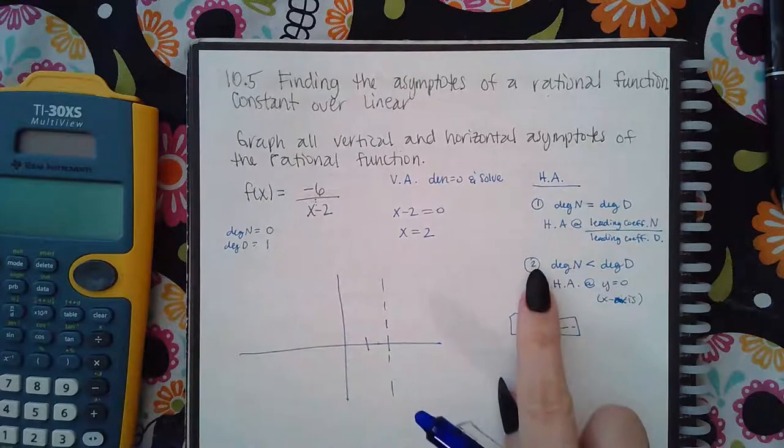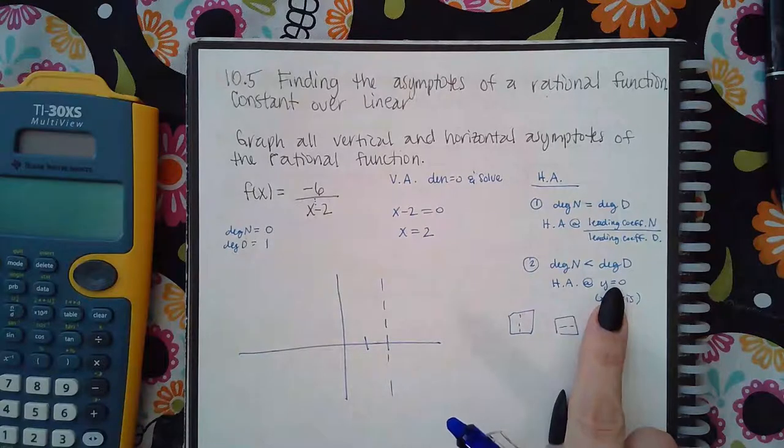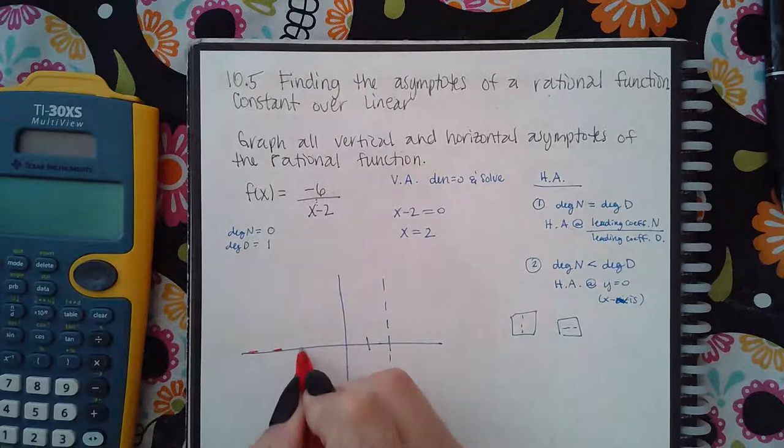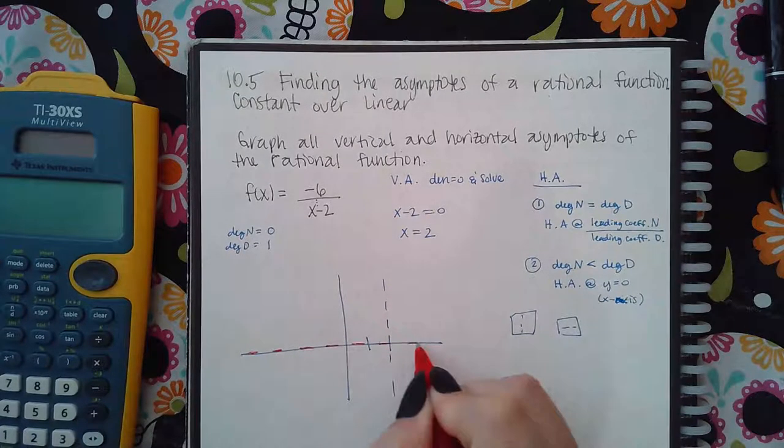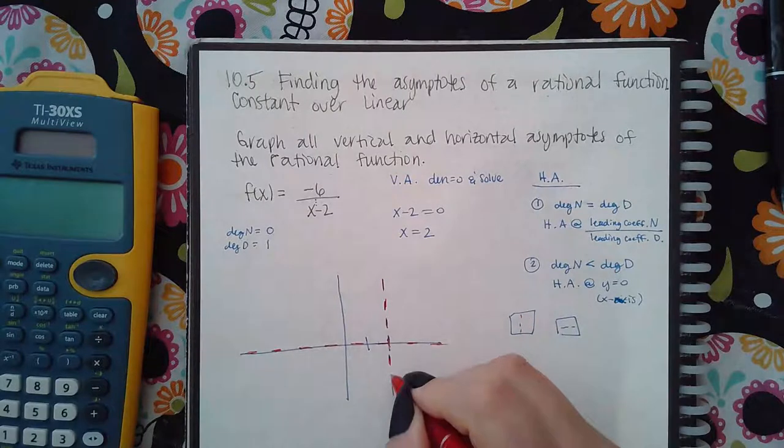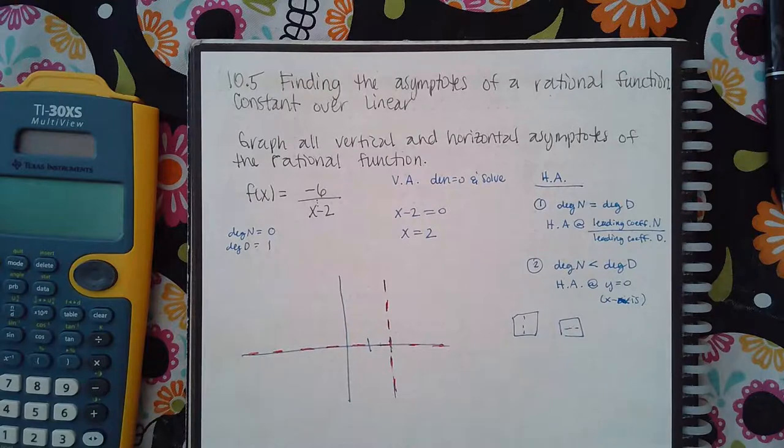So I have case two, which means my horizontal asymptote is automatically going to be at zero, which means I'm going to draw a horizontal asymptote right on top of the x-axis. And so this is where my vertical asymptote and my horizontal asymptote should be drawn inside Alex.